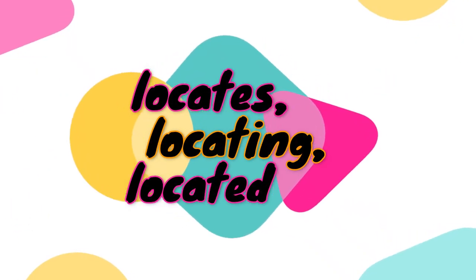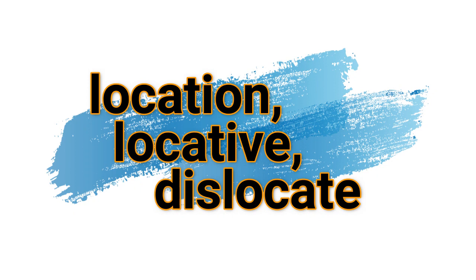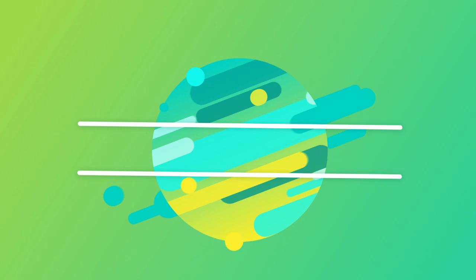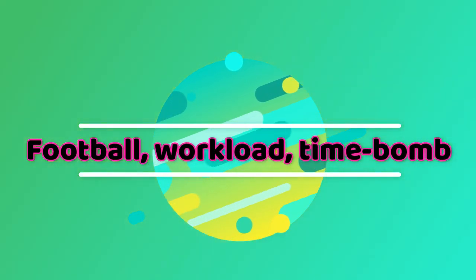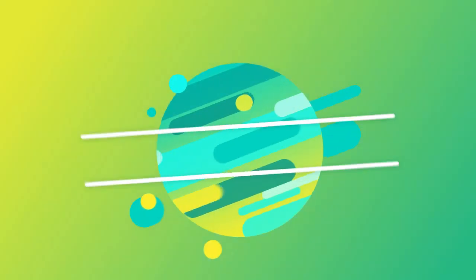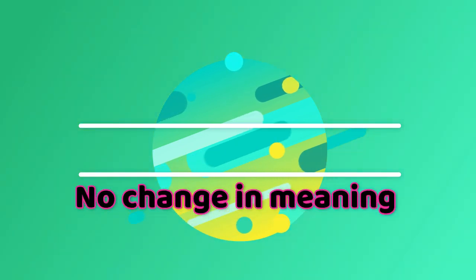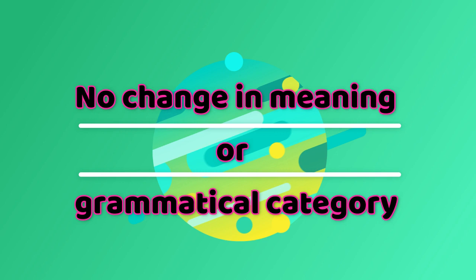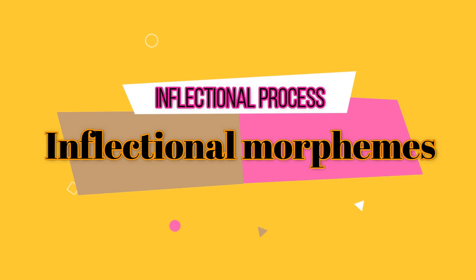The first category of words includes: locates, locating, and located. These words clearly indicate that the suffixes -es, -ing, and -ed added to the verb 'locate' do not change the grammatical category of these verbs. Neither do these suffixes change the meaning of these verbs. They show the present form of the verb, the past form of the verb, and the present participle form of the verb. Thus, these are called inflectional morphemes.